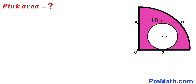Welcome to Pre-Math. In this video we have a small white circle with center P, fully confined between this quarter circle and segment AB, as you can see in the diagram, such that points C and D are the points of tangency.